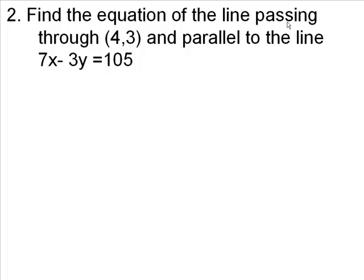Number 2, find the equation of the line passing through the point 4, 3, and parallel to the line 7x minus 3y equals 105.